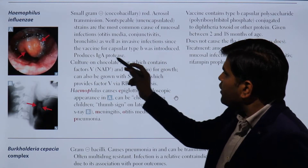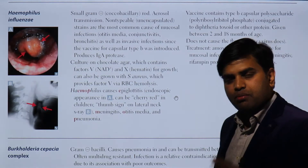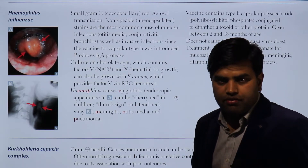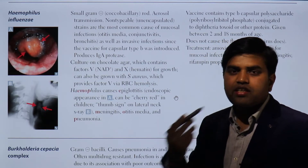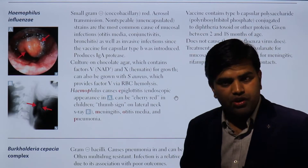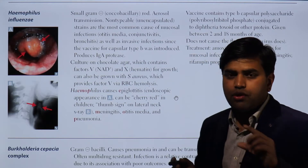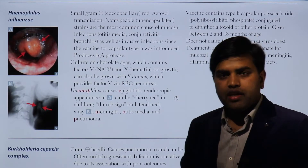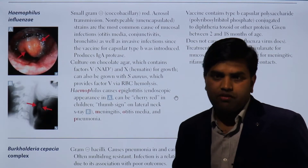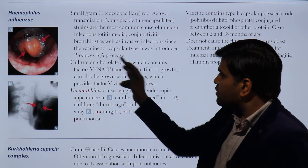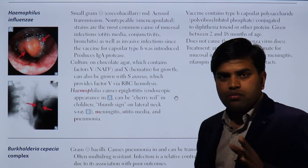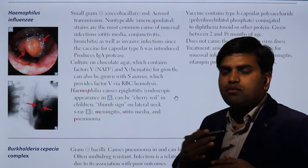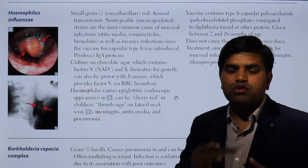An important enzyme produced by this organism is IgA protease. As previously discussed, all mucosal surfaces — whether the GI tract, respiratory tract, or genitourinary tract — have a protective layer of immunoglobulin A. This enzyme, IgA protease, breaks down that immunoglobulin A protection layer.